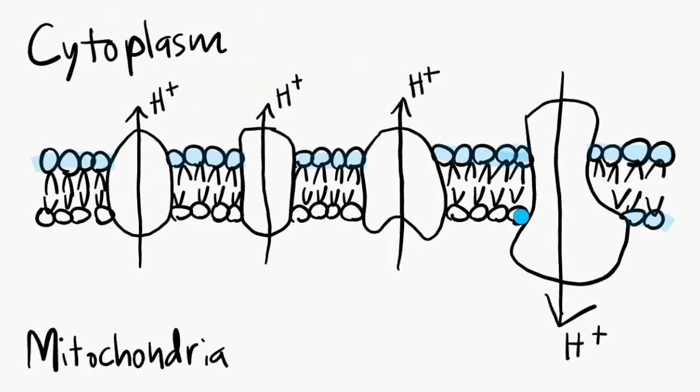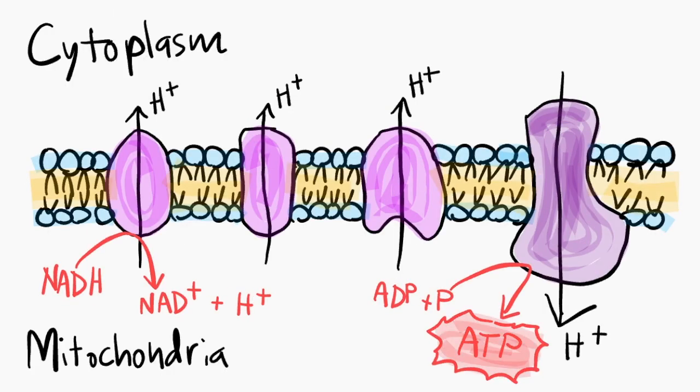The electron transport chain can be described as a group of carrier proteins bound together. And like the citric acid cycle, the electron transport chain also occurs inside the mitochondria.